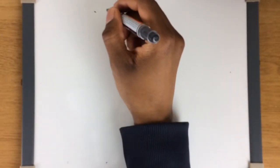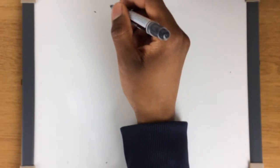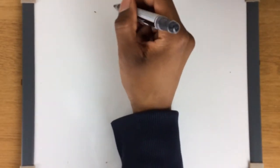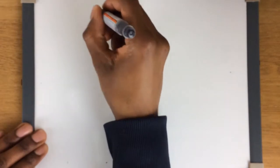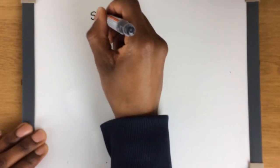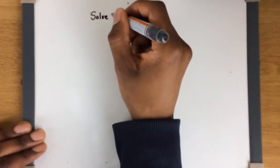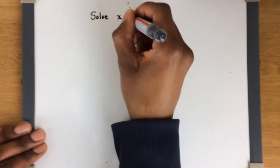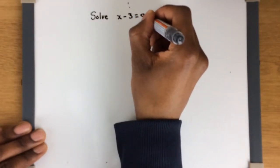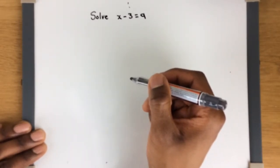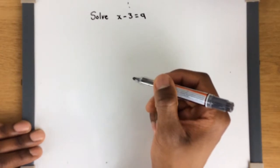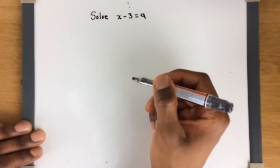This is the first video, and in this video we're just looking at how to solve an algebraic equation. So this is a really simple algebra equation — something like: solve x minus 3 equals 9. This is actually a lot simpler than it looks, so let's start with a slightly simpler example just to understand how this whole algebra works.